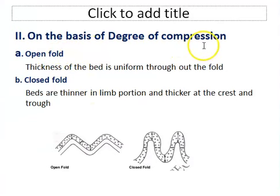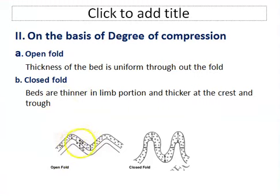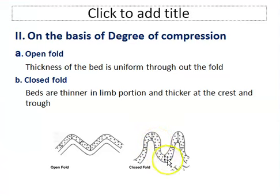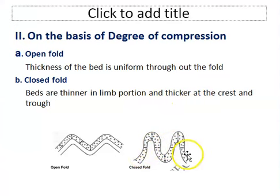The second classification is on the basis of degree of compression. On this basis, folds are classified into open folds and closed folds. In open folds, the thickness of the bed is uniform throughout the fold. In closed folds, beds are thinner in the limb portion compared to the axial region or crest — the crest has more thickness while the limb portion has lower thickness.